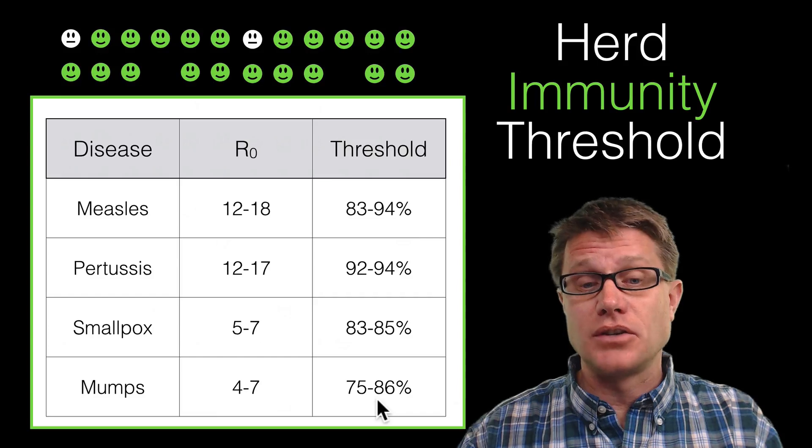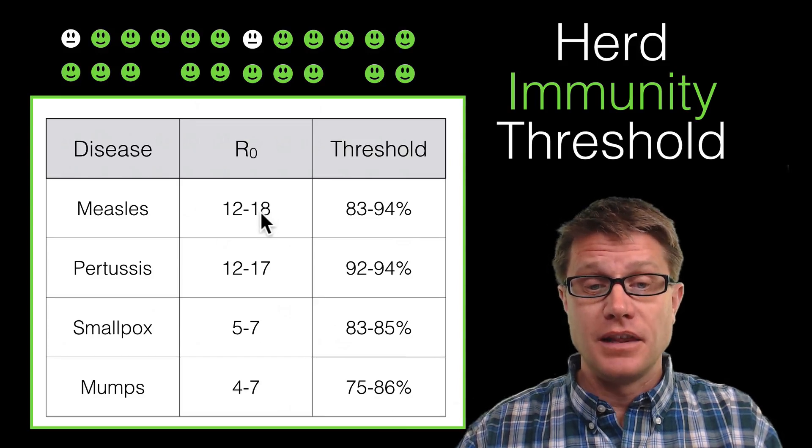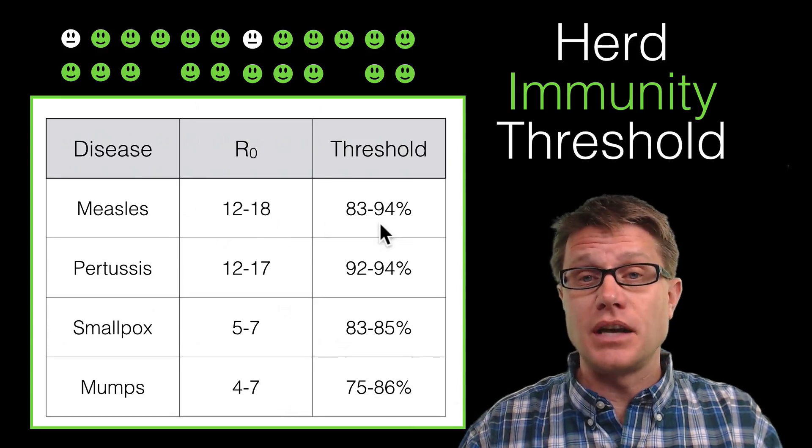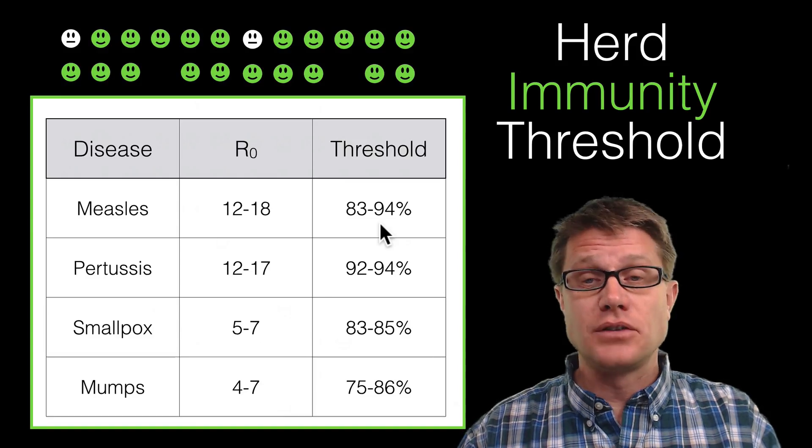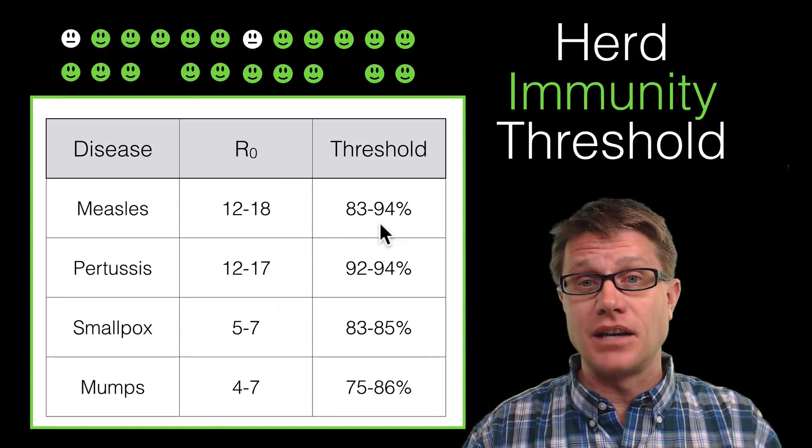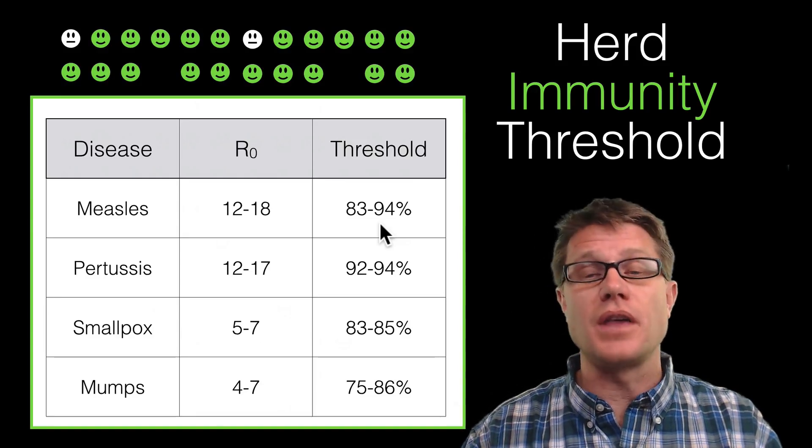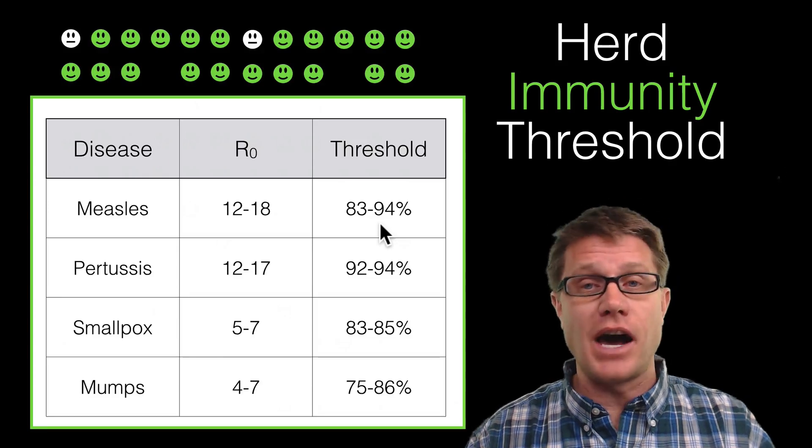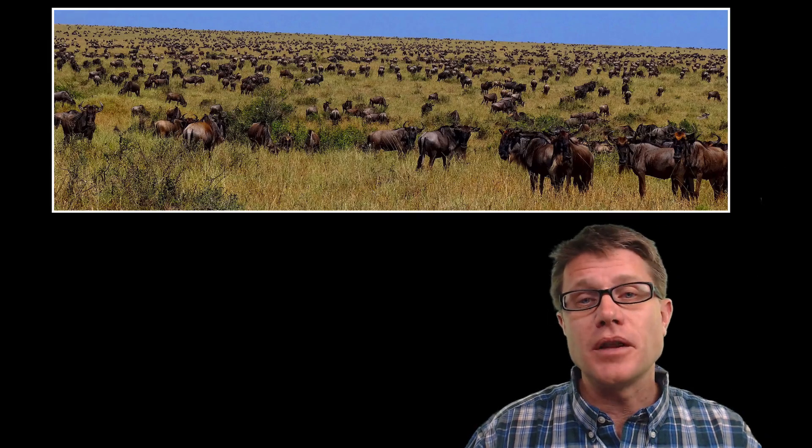But as those R0 values get greater and greater, like 18 in measles, we have to have 94 percent of the individuals immune. And so as people decide not to get vaccinated, what's going to happen? We lose that herd immunity and we are going to have outbreaks of disease.